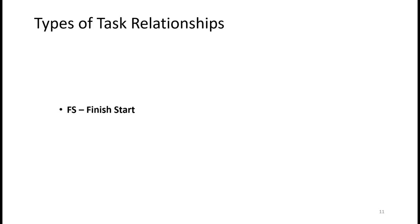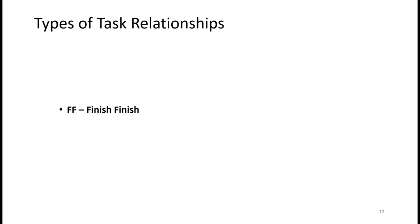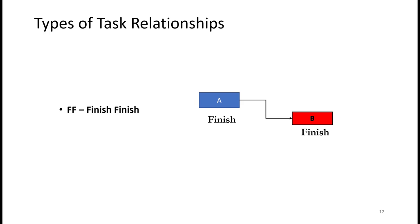The first type of relationship is called a Finish-to-Start relationship. According to this relationship, a task will only begin when another task has been finished. In this case, task B will only start when task A is finished. This is called a Finish-to-Start relationship, or FS for short.